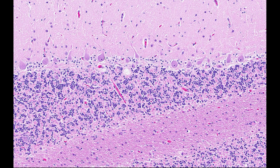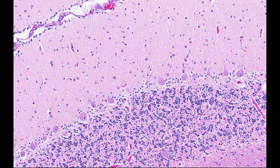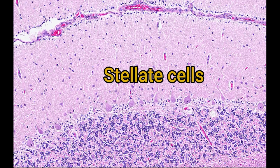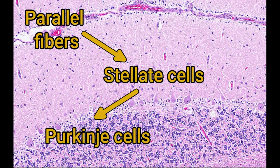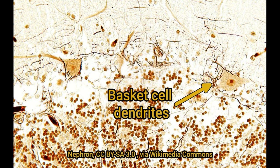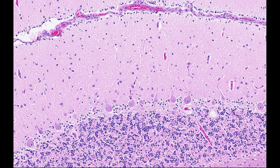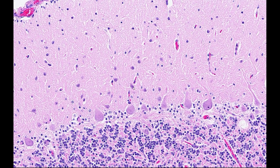So if the granule cells are the inputs and the Purkinje cells are the outputs, what are the other three types of neurons and where are they? Two of the three neuron types are in the molecular layer: the stellate cells and the basket cells. Stellate cells receive input from the parallel fibres of the granule cells, and their axons synapse on Purkinje cells with an inhibitory effect, modulating the activity of Purkinje cells. Basket cells send out dendrites that wrap around the Purkinje cell bodies, making them look like little baskets that contain the Purkinje cell — hence the name. Basket cells receive input from the parallel fibres and climbing fibres, as well as stellate cells and other basket cells. Ultimately they also inhibit the activity of Purkinje cells.